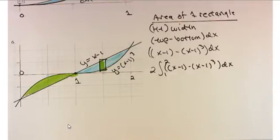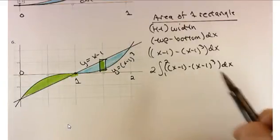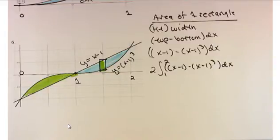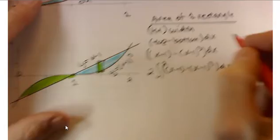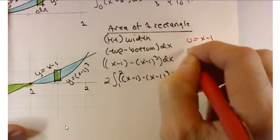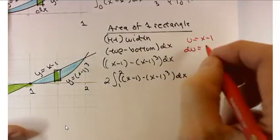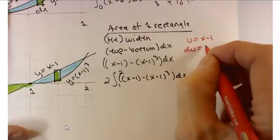That's not so bad until you look more closely and realize you have to deal with (x minus 1) cubed. You can't distribute the cube as x cubed minus 1. So let's find a workaround — a u substitution. Let u equal x minus 1. Then du equals dx.